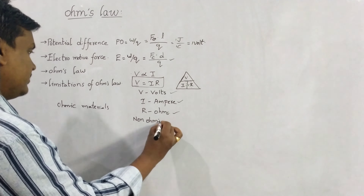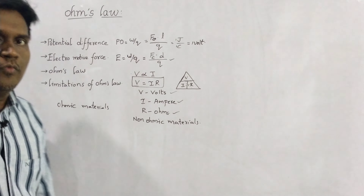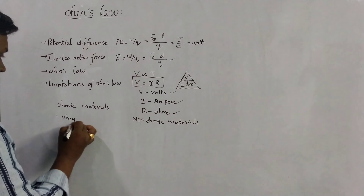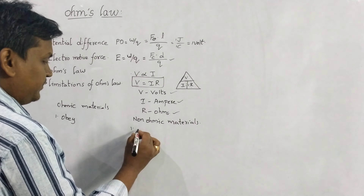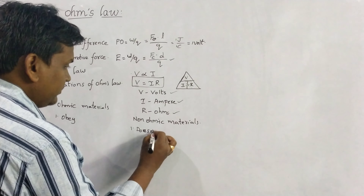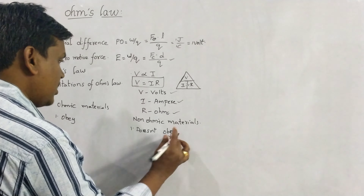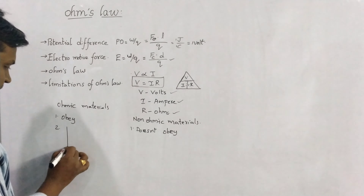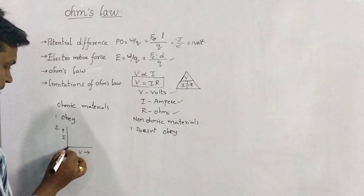If potential difference increases, current also increases. If potential difference decreases, current also decreases. This happens at constant temperature. At constant temperature, the potential difference produced in the conductor is directly proportional to the current flowing through the conductor. So V is directly proportional to I, and to make this an equality, we bring in constant R. So V equals IR.